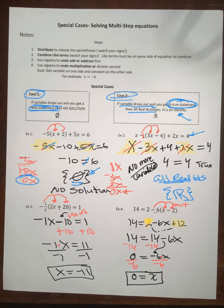In example 2, the variable actually dropped out and we ended up with a true sentence, so it's all real numbers. In example 1, the variable dropped out and we ended up with a false statement — negative 10 is not equal to 6 — so therefore that was no solution. Those are our two special cases.